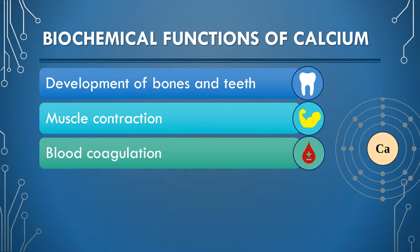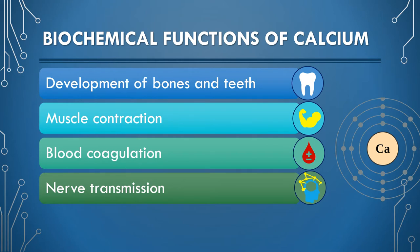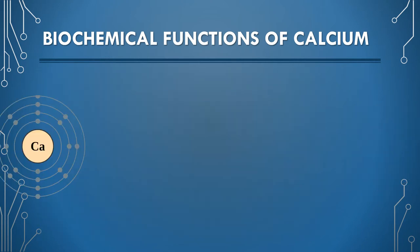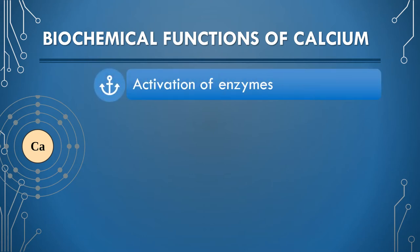Several reactions in the cascade of blood clotting processes are dependent on calcium. Calcium is necessary for transmission of nerve impulses. Moreover, calcium influences the transport of water and several ions across the membrane. Calcium is also needed for the direct activation of enzymes.